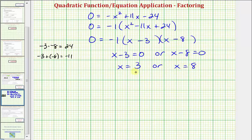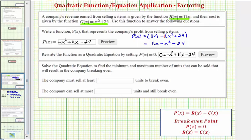So these are the number of items the company would sell and make zero profit. Which isn't a good thing, they do want to make a positive profit. But for this question, this tells us that the company must sell at least three units to break even, and the company can sell at most eight units and still break even. So hopefully the company will sell somewhere between three and eight units, so they can make some profit.